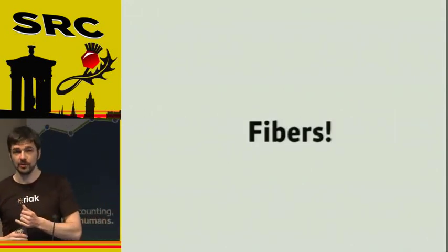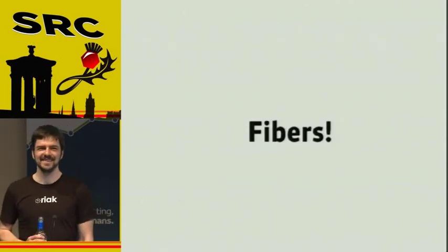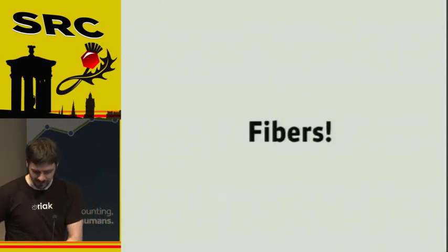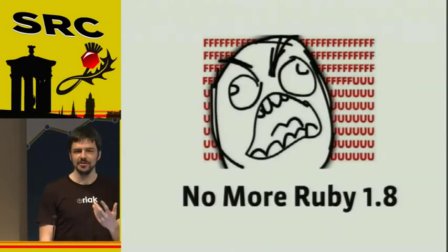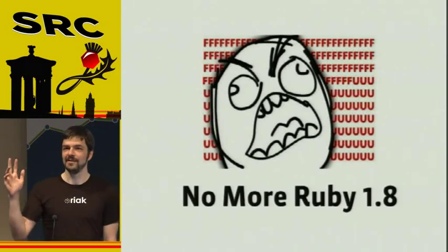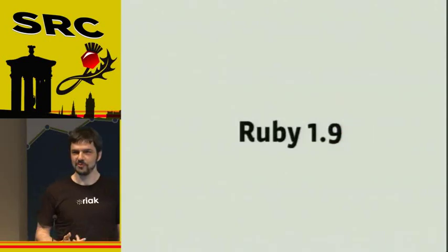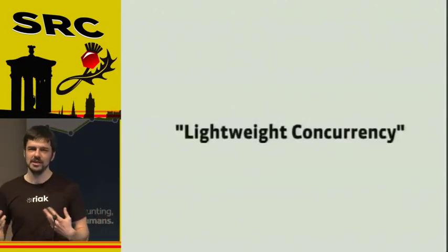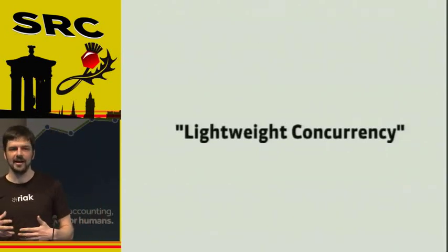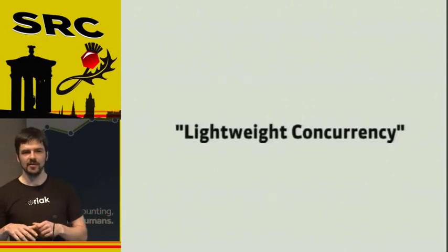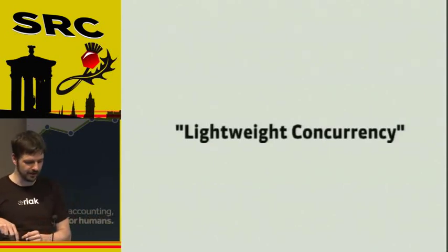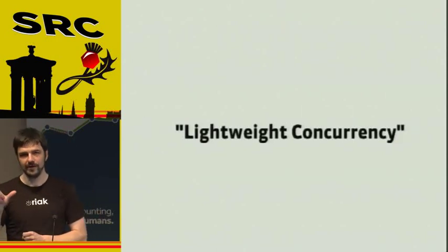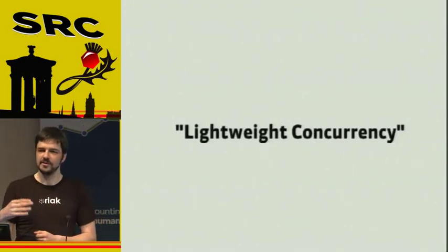Has anyone heard of fibers before? Has anyone used fibers? Fibers are terrible. The basic gist is you can't use them in Ruby 1.8 — but you shouldn't be using Ruby 1.8 anyway. Fibers were introduced in Ruby 1.9 as a means of lightweight concurrency. At the basic core it's either called a continuation or a coroutine. A fiber is a means to say somewhere in your program's flow: okay, I'm going to stop here and return control of the flow to something else until you explicitly tell me I can start working again.